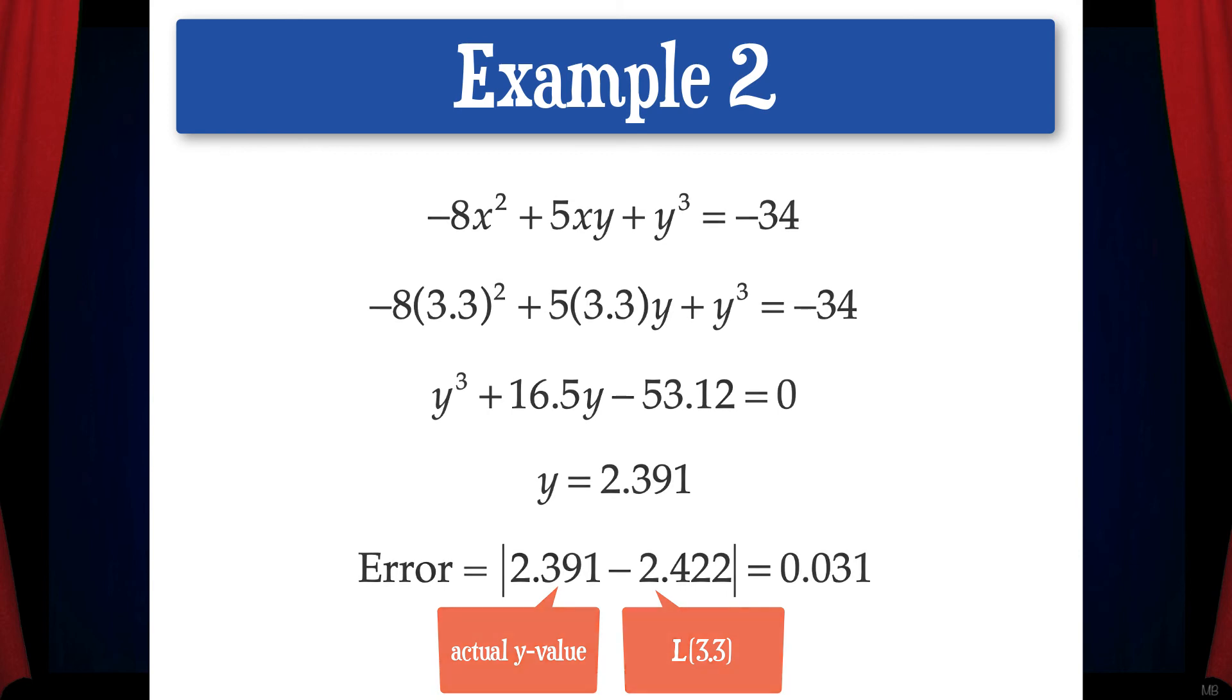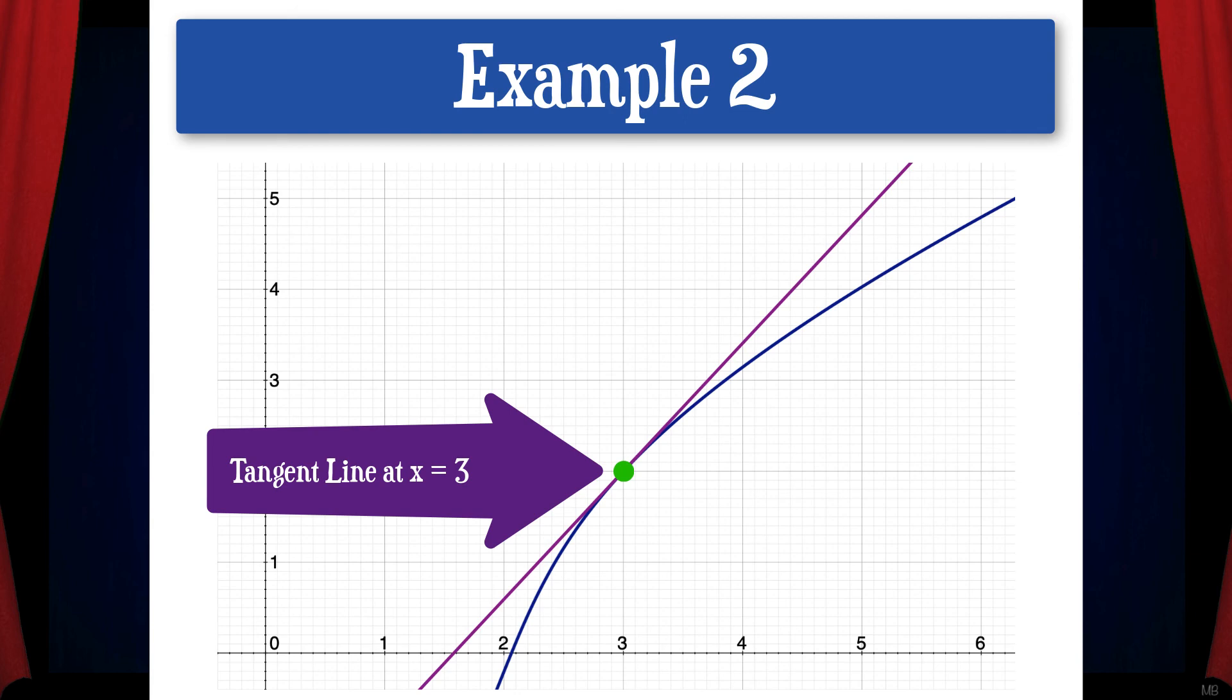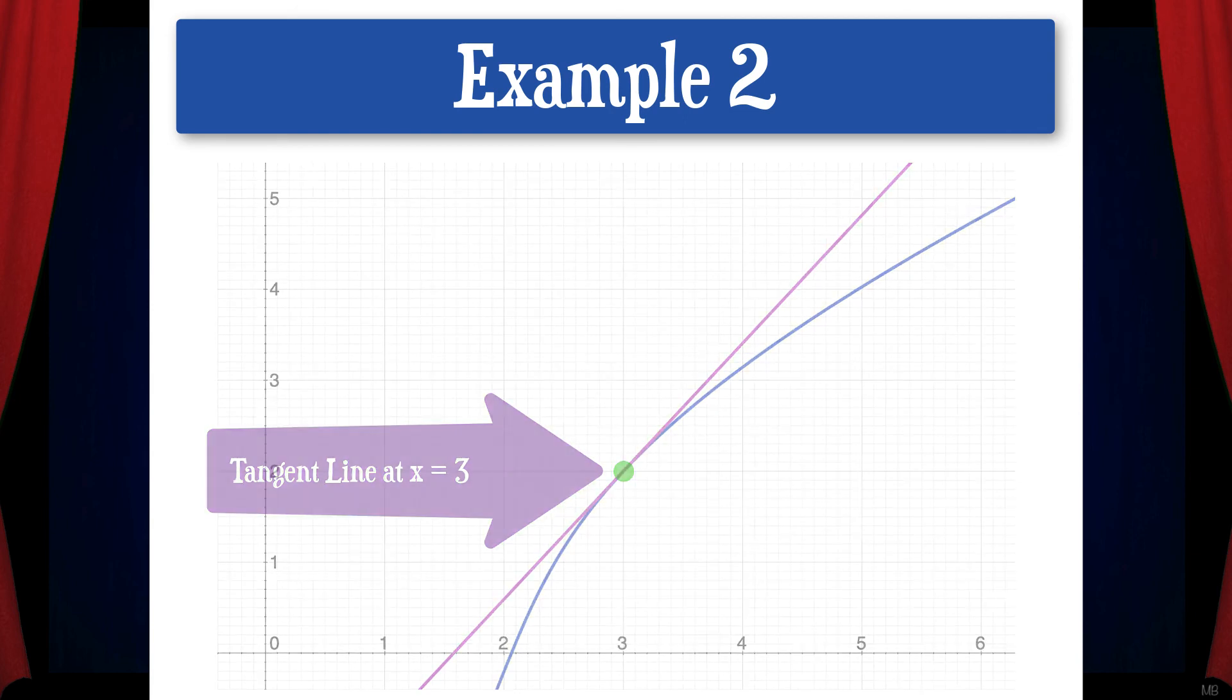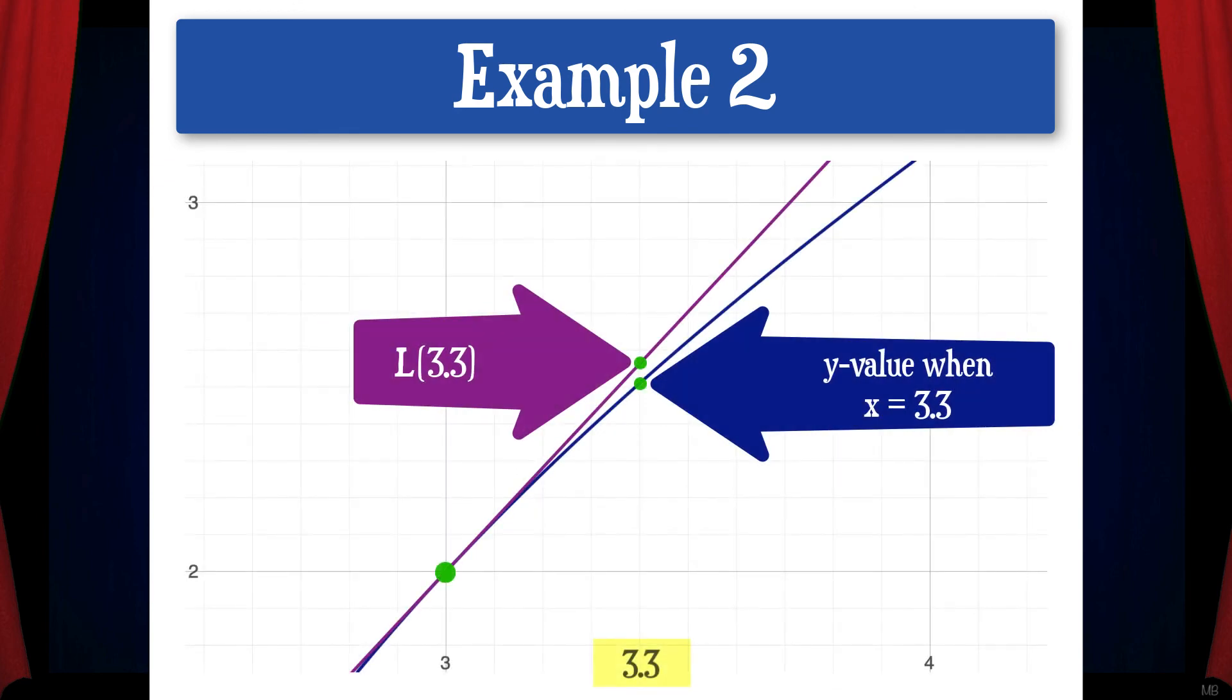Let's look at this scenario graphically. Here we have a portion of the curve shown and the tangent line at x equals 3. If we zoom in, we can see that the tangent line and the curve are very close together at x equals 3.3. So we can use the tangent line to approximate the curve at x equals 3.3.